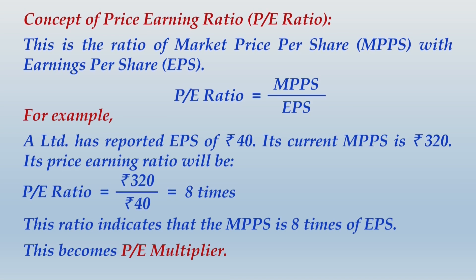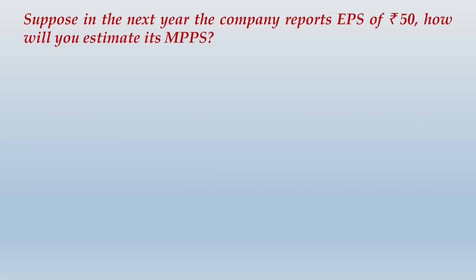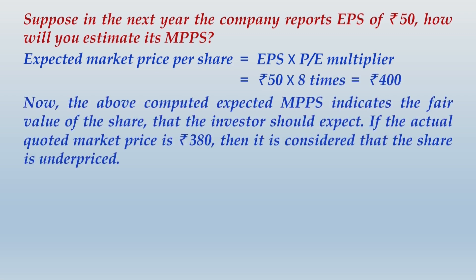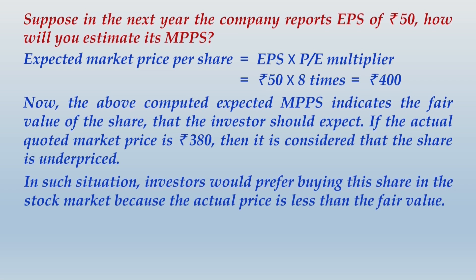Once you have completed writing, let us see the role of the PE multiplier. Suppose next year the company reports EPS of rupees 50. The expected market price per share will be EPS multiplied by PE multiplier: rupees 50 into 8 equals rupees 400. This computed expected MPPS indicates the fair value of the share. If the actual quoted market price is rupees 380, the share is underpriced and an investor would be advised to buy it.